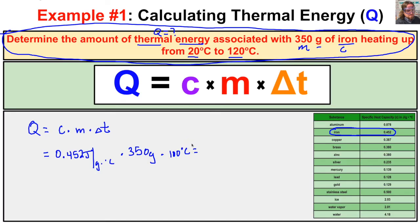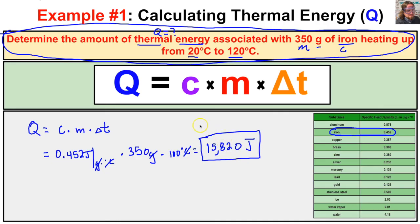Using Q equals C times M times delta T: 0.452 times 350 times 100 gives us 15,820 joules. Grams cancel, degrees Celsius cancel, leaving joules. Since the sign is positive, this 350-gram sample of iron must absorb 15,820 joules of thermal energy, making this an endothermic process.